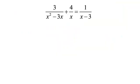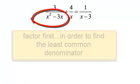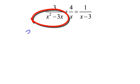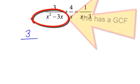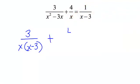Let's try another one. I have 3 over x-squared minus 3x, plus 4 over x, equals 1 over x minus 3. I need to make sure that I factor anything that needs to be factored. The denominator in my first term could be factored by the GCF. So let's begin factoring it — the GCF will be x. I will pull the x out and that will leave me x minus 3 in that first term, plus 4 over x still, and on the right side 1 over x minus 3. So I need to find my least common denominator because I don't want all these fractions.